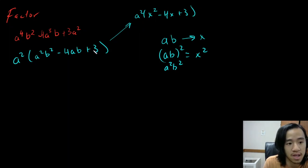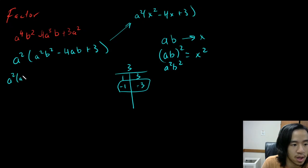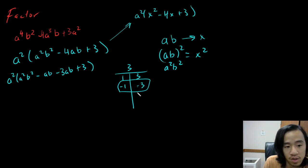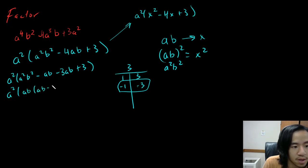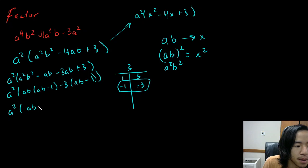So a is one and c is three, giving us one times three equals three. I need to find two numbers that add to negative four: negative one and negative three works. Let's rewrite this: a squared, then a squared b squared, then minus ab minus three ab plus three. So I'm rewriting my B term as the two things we found. Now GCF the first pair — I can take out ab, leaving ab minus one. Take out negative three from the second pair: negative three parentheses ab minus one. Now grouping: ab minus three times ab minus one. So here is my lovely answer.